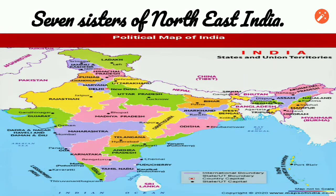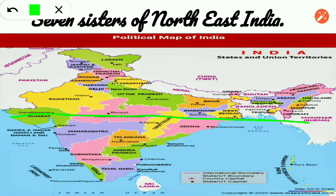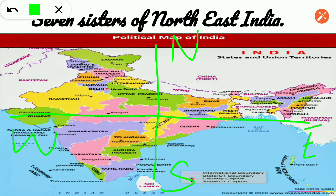Hello everyone. As I always say, we can always learn something new every day. Today we will learn about the seven sisters of northeast India. This picture you can see here is our country India, with north at the top, south at the bottom, east on the right side, west on the left side. North and east together is called northeastern.